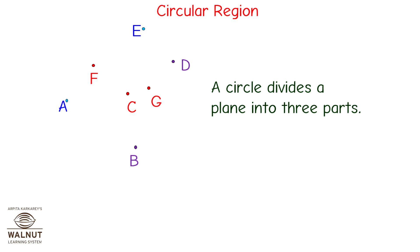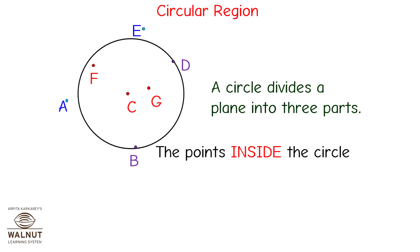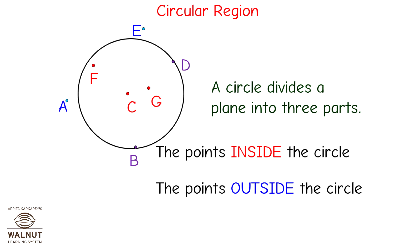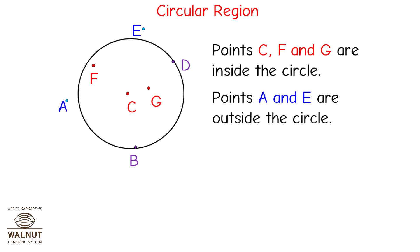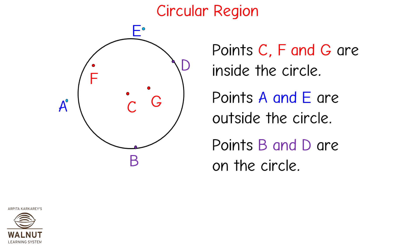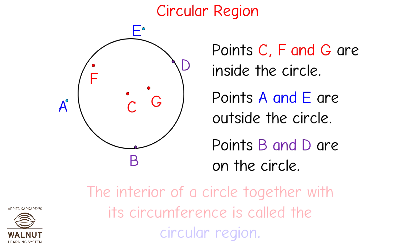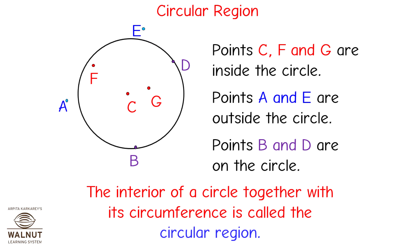A circle divides a plane into three parts: the points inside the circle, the points outside the circle, and the points on the circle. Points C, F, and G are inside the circle. Points A and E are outside the circle. Points B and D are on the circle. The interior of a circle together with its circumference is called the circular region.